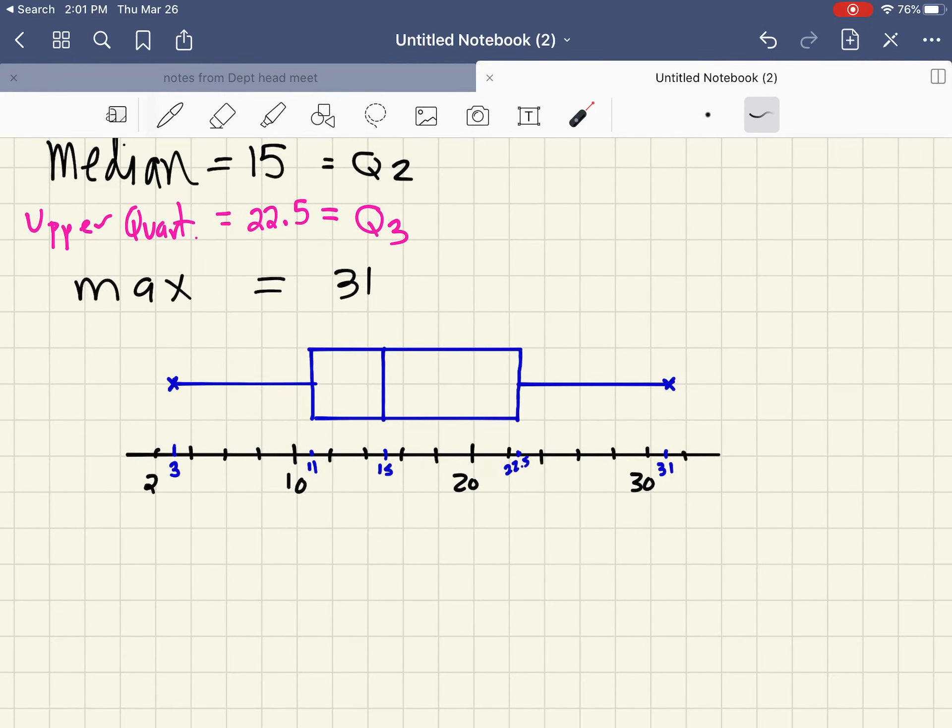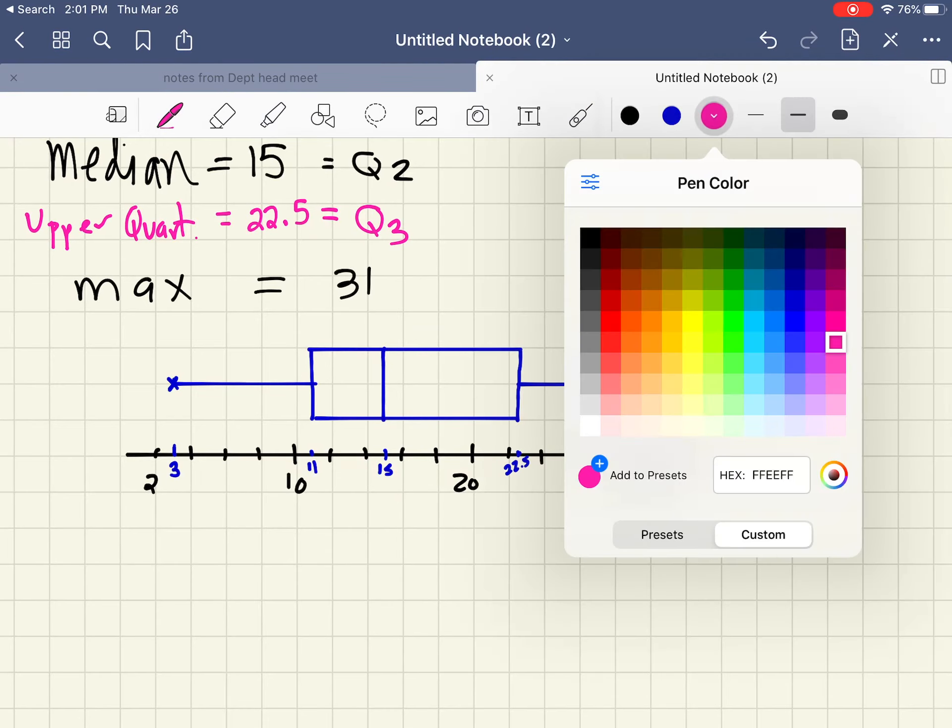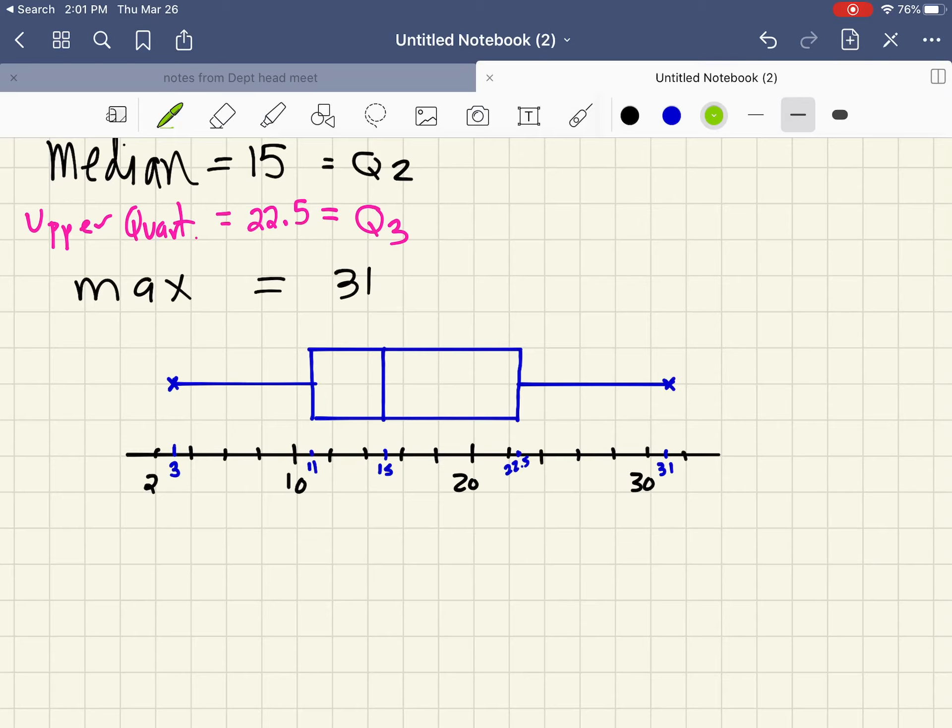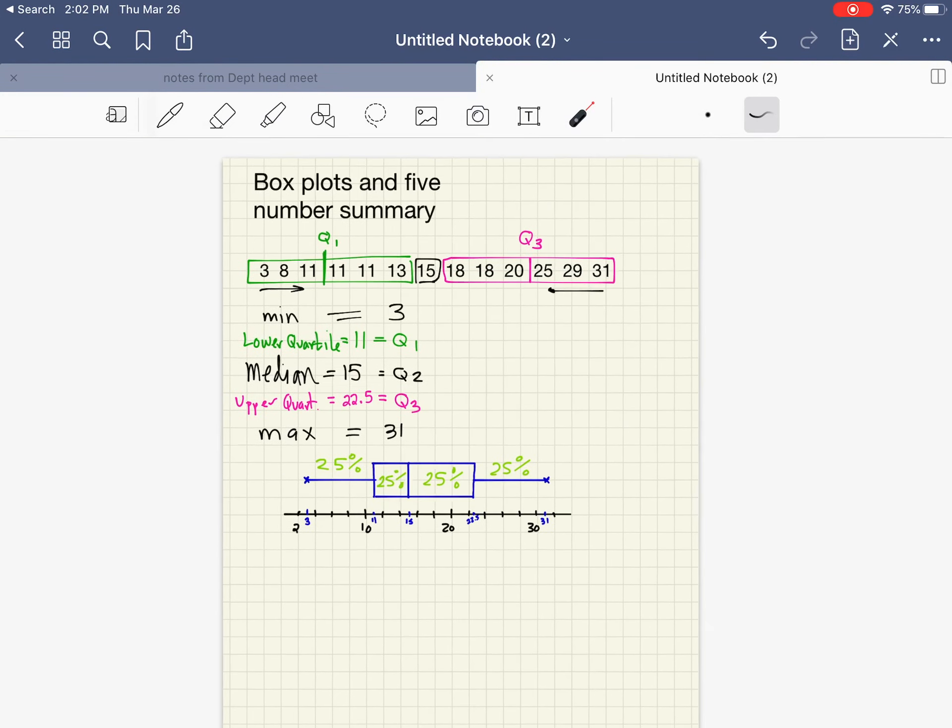Now what a box plot does is it allows us to see where the data falls. 25 percent of my data falls in each of these quartiles. The first quartile is 25%, the second quartile is 25%, third quartile is 25%, and the fourth quartile is 25%. It allows us to see where the data is concentrated—this is the smallest distance between the quartiles, so therefore the most concentrated area of the data. That is a box plot and five-number summary.